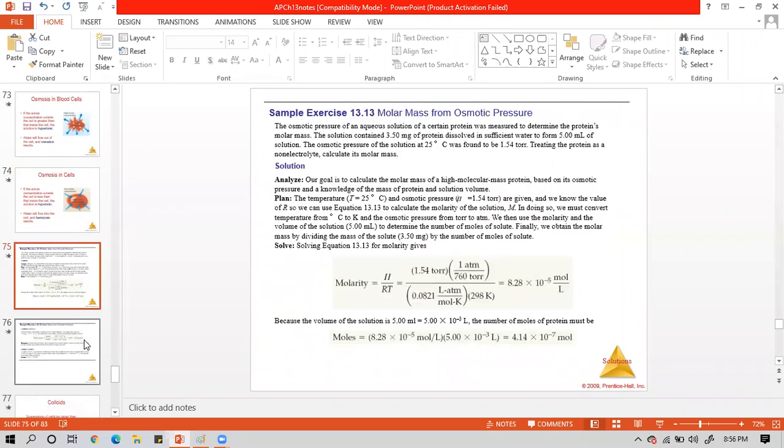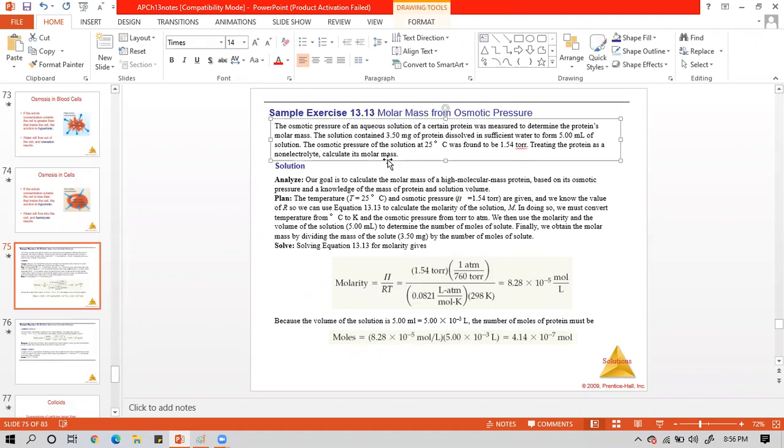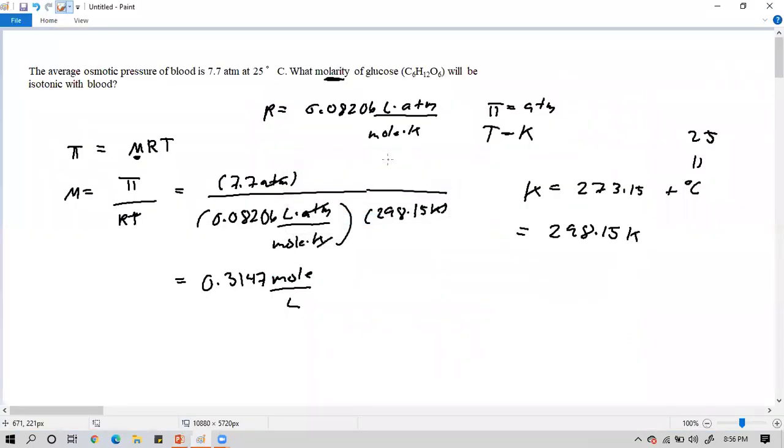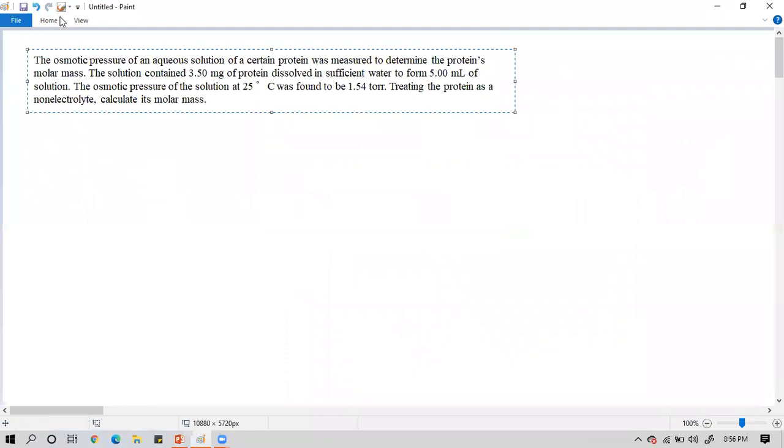The gas constant is 0.08206 liter atm per mole per Kelvin. The temperature in Kelvin is 273.15 plus degrees Celsius. Therefore, the temperature of blood at 25 Celsius is 298.15 Kelvin. We'll substitute 298.15 Kelvin here. Our answer will be 7.7 divided by 0.08206 times 298.15, and that would be 0.3147 moles per liter. That's our answer for osmotic pressure. It's just direct substitution, we just have to calculate the parameters present in the equation. We got it correct: 0.31.